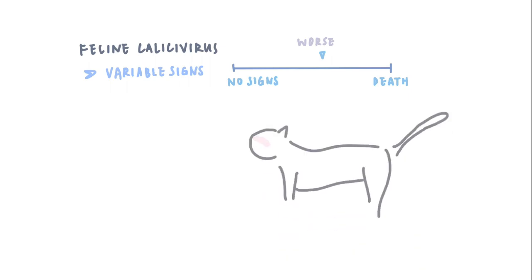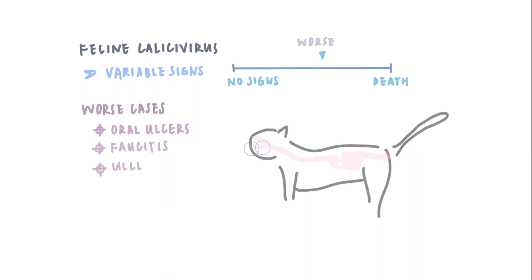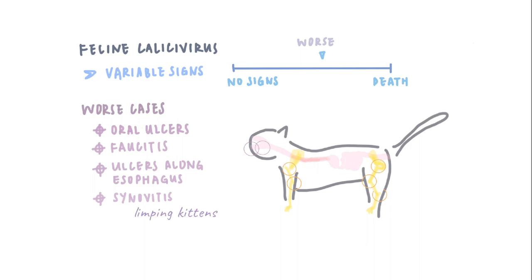For worse cases of feline calicivirus, we'll also see oral ulcers, pharyngitis — inflammation at the back of the mouth — ulcers along the esophagus, and synovitis, which is basically inflammation in the joints. This will cause weakness in the limbs, especially for kittens. We call them limping kittens.